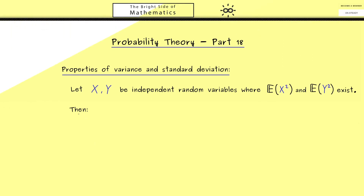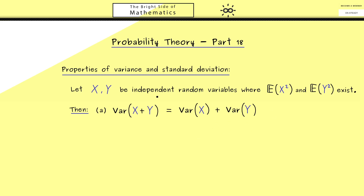Now we are also able to say something about the sum of the two random variables. More concretely, we can calculate the variance of X plus Y. And maybe it's not a big surprise — in this case the variance is indeed additive, meaning we can simply pull out the plus sign. However, it's important that the two random variables are independent.